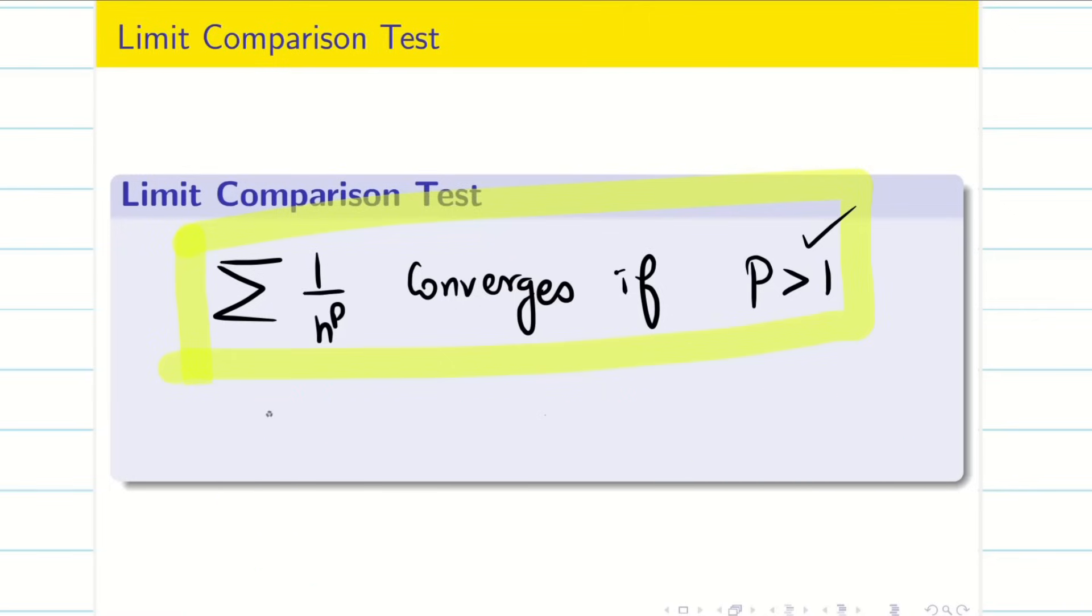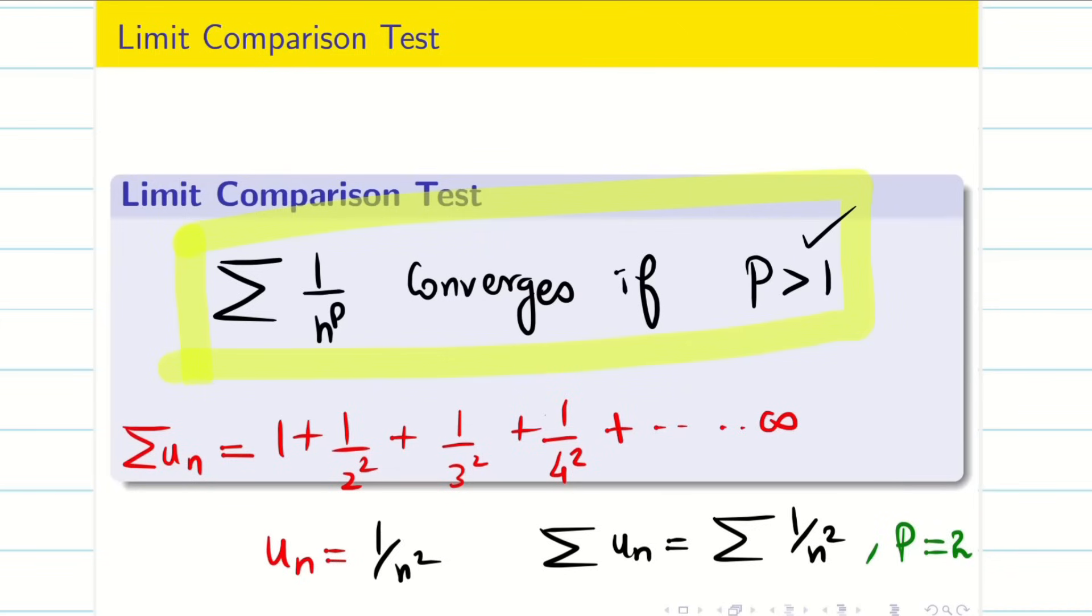Now, in a similar way, if I take one more problem. 1 plus 1 by 2 square, 1 by 3 square, 1 by 4 square, etc. up to infinity. Then, summation un is going to be this. I can easily find my nth term is 1 by n square. So, summation un equals summation 1 by n square. Very good. Now, you see the p value. Here, p is equal to 2 because we have n square in the denominator. So, just using this result, I can say this series is a converging series.